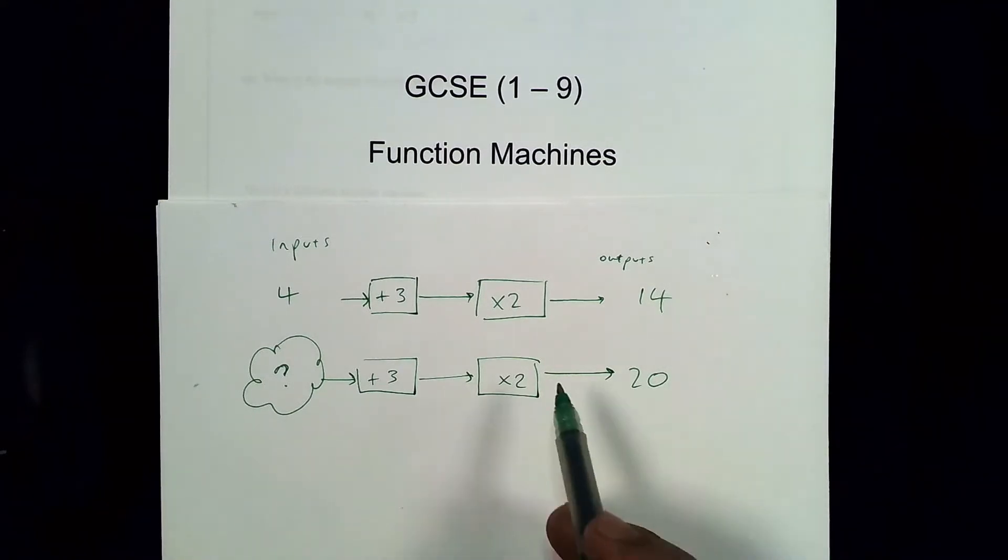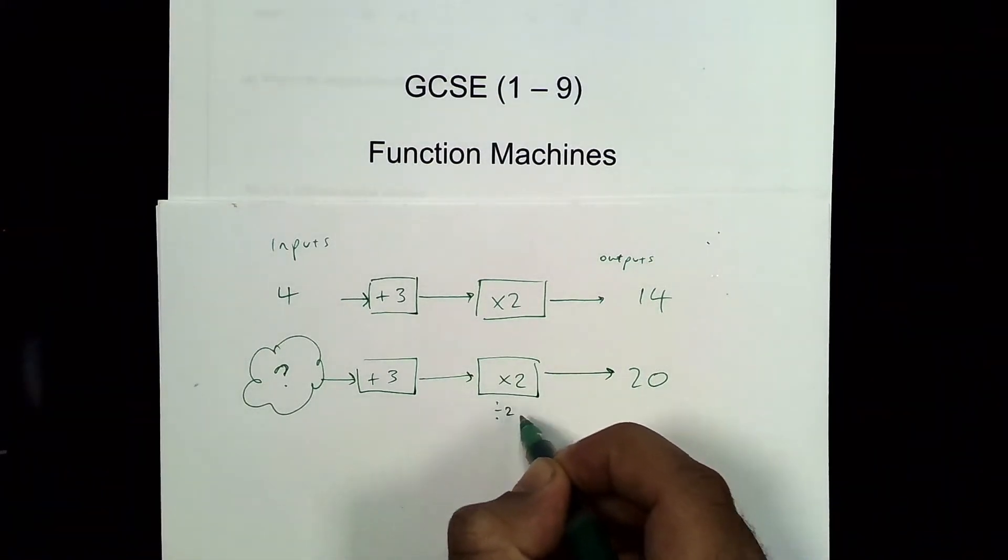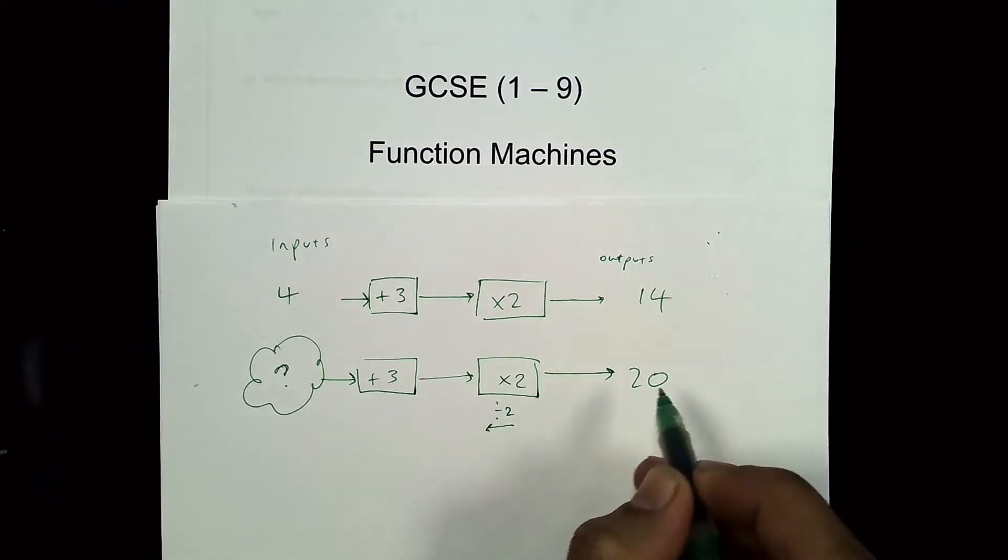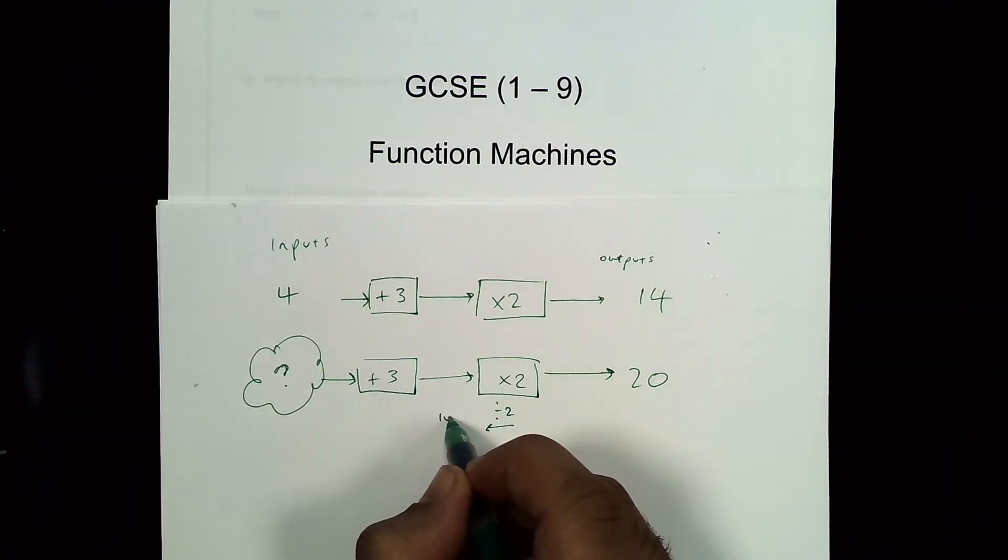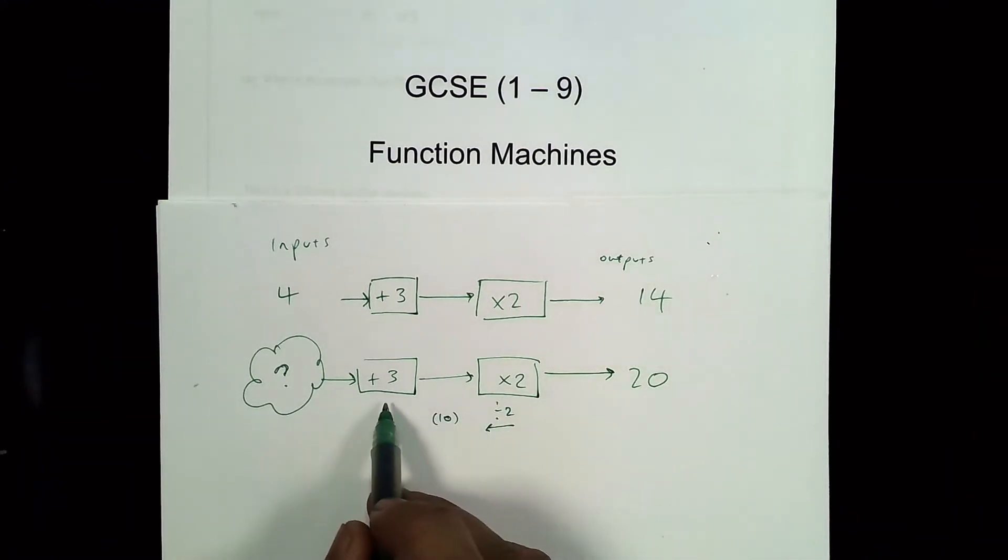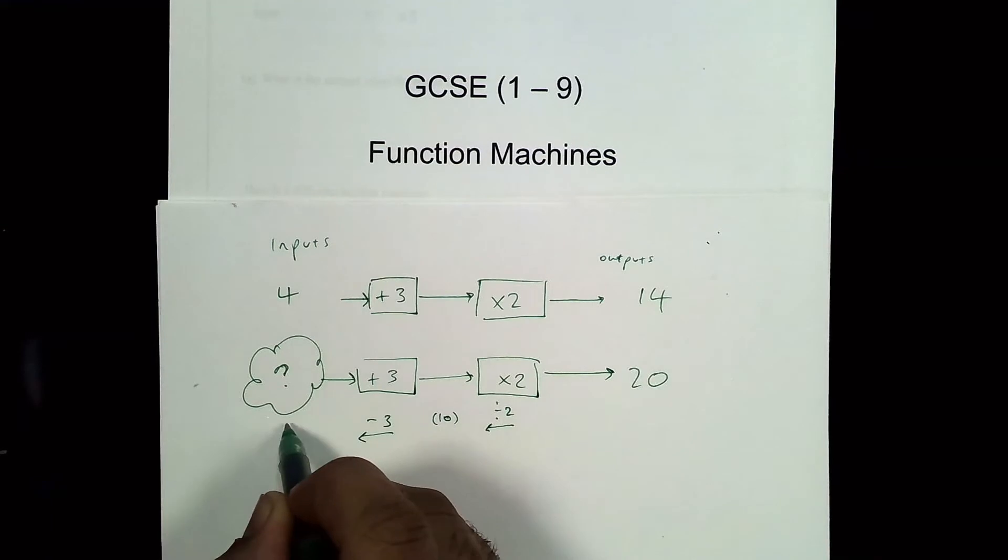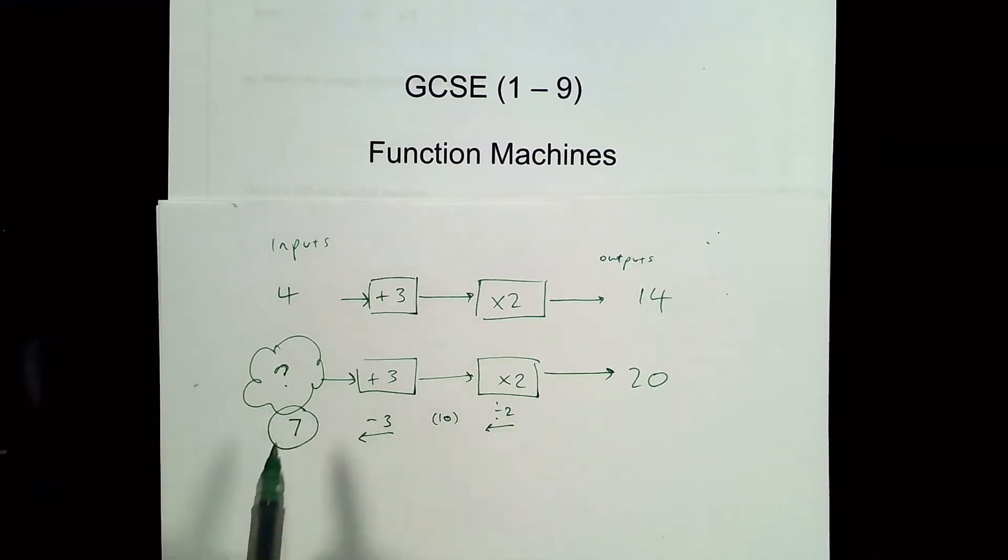So if I'm going back along the function machine to find the input, you need to do the opposite of this operation. Instead of times by two, I'm going to divide by two to go that way. So twenty divided by two, that's ten. And then instead of adding three, I'm going to take away three. Ten take away three, so my answer then is seven. If I put seven into this machine, it ends up giving me twenty.